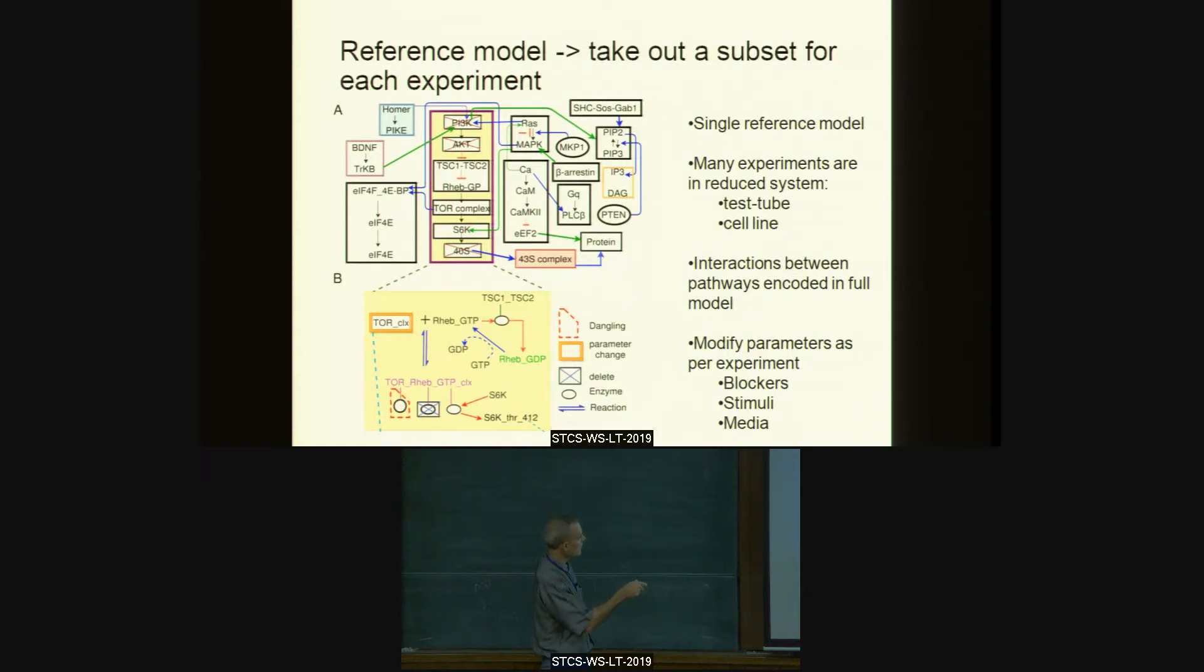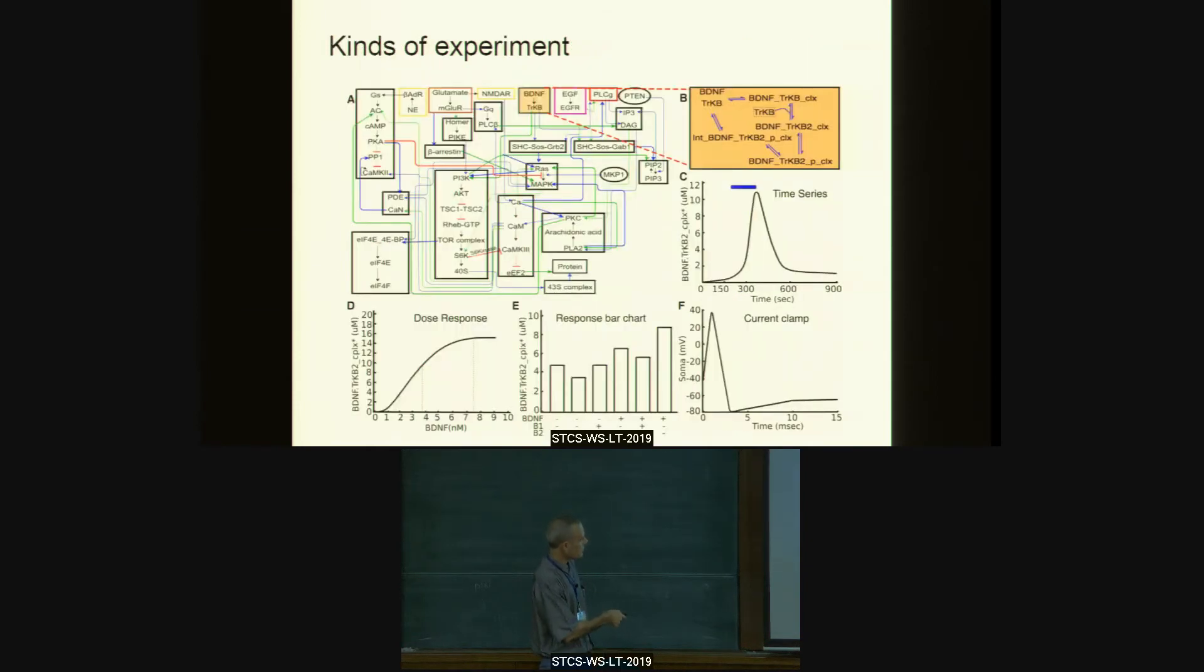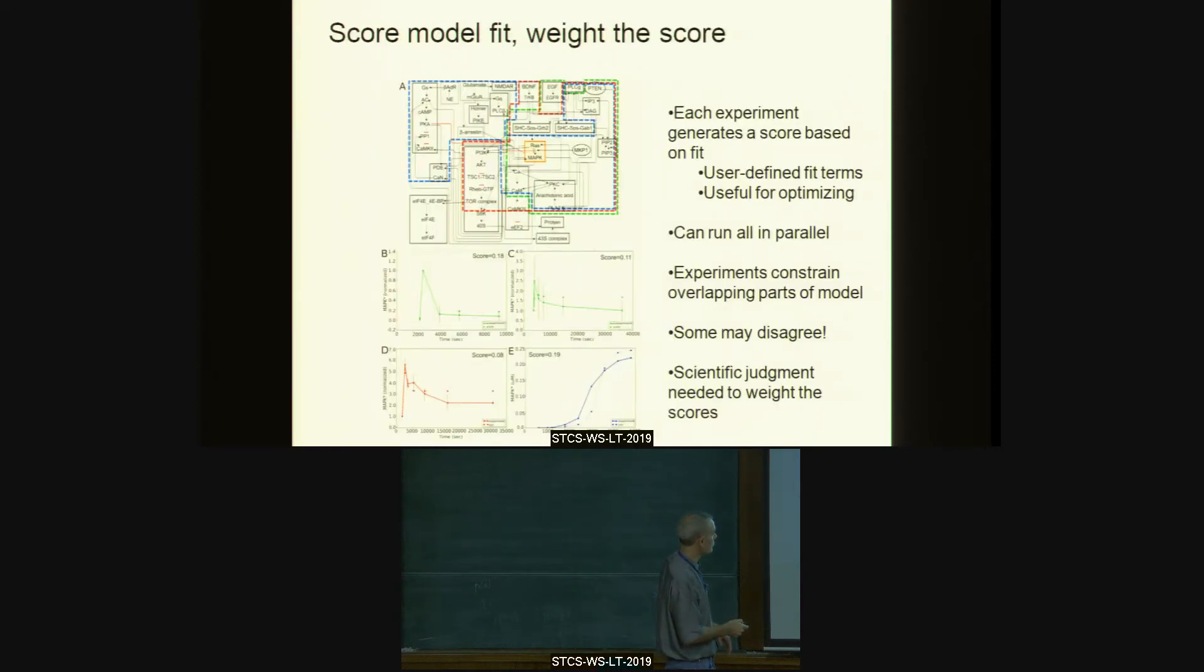We have, for example, here's our reference model. And each of these is a block. Each of these has got tens, twenties of reactions in them. We have a single reference model out of which a given experiment may only pertain to a small fraction. So then we look at that, we tell the system, look at this subset, model it, put in the blockers, the stimuli, compare the inputs and outputs. And we can do many kinds of experiments ranging from standard chemical ones to various electrical ones. We can do LTP stimuli. We can do field potentials. We can do all sorts of things with this system.